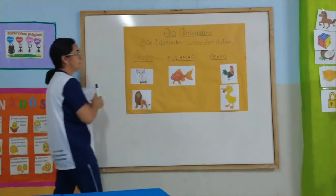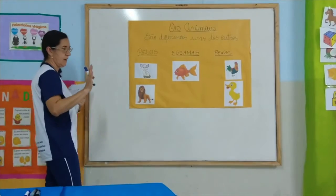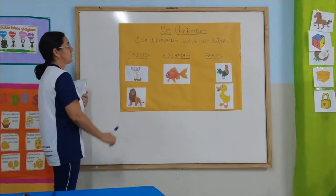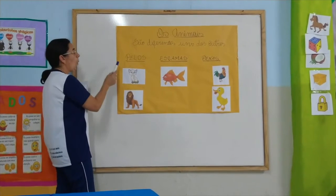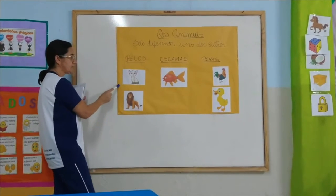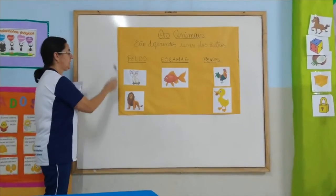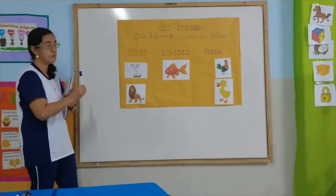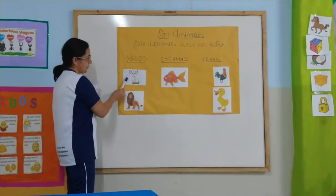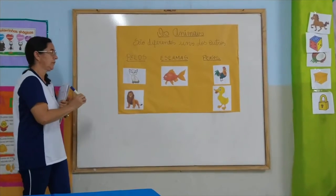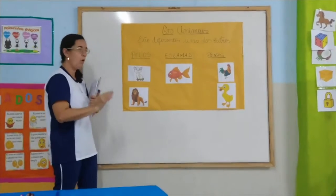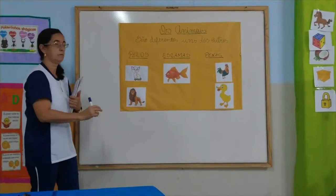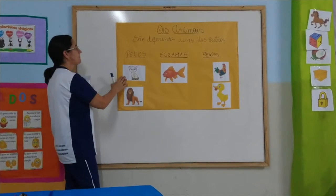Animals are different from each other, right? For us to observe, animals have their different characteristics. Here we're going to study that animals are different because some have fur. But even having fur, they are different from each other. The characteristic is having fur, but they differ. If you observe, here I have a little cat and a lion — and there could also be an image of a dog. They have the body covered in fur: the cat, the lion, the dog, and many other animals.